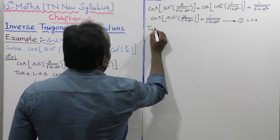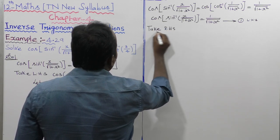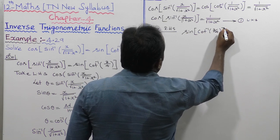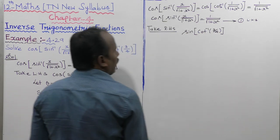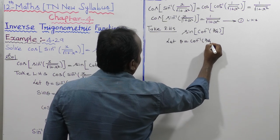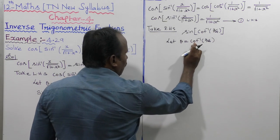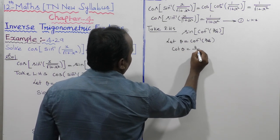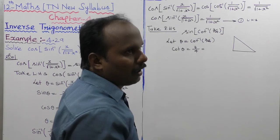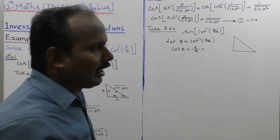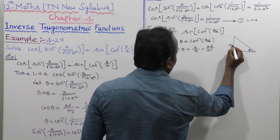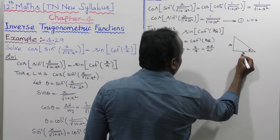Next, let us take RHS: sin of cot inverse of 3 by 4. Let theta equal to cot inverse of 3 by 4, so cos theta equals 3 by 4. Taking the right angle triangle using the cos theta formula — adjacent side divided by hypotenuse — the adjacent side is 3, opposite side is 4, and hypotenuse is 5.